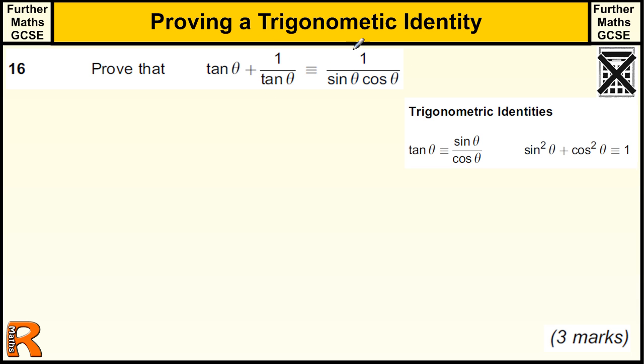So we're going to prove this side is equal to this side. We're going to start with the more complicated side and rearrange it to try and get this same thing. So we're going to start with tan θ plus 1 over tan θ.